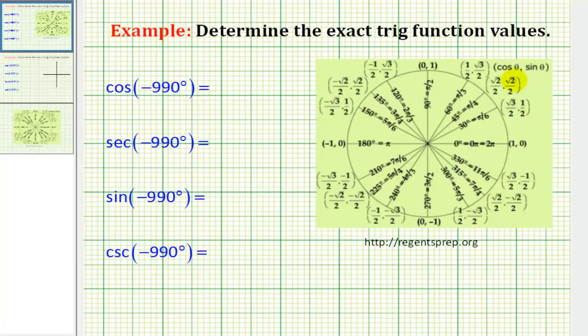Number one, we can use a unit circle, or number two, we could use reference triangles. In this example, we'll use the unit circle.